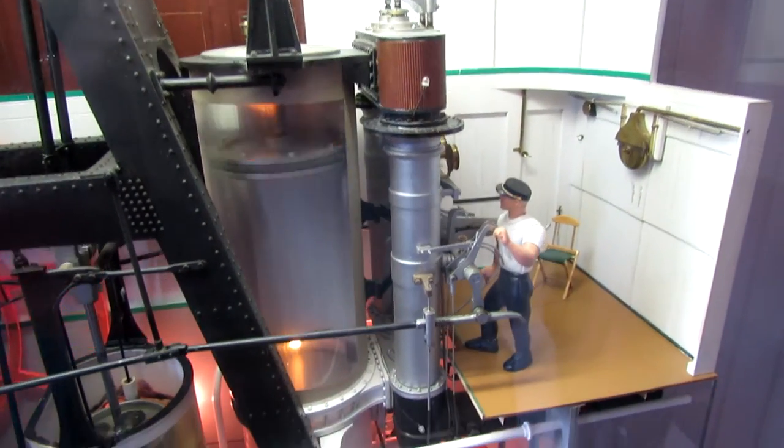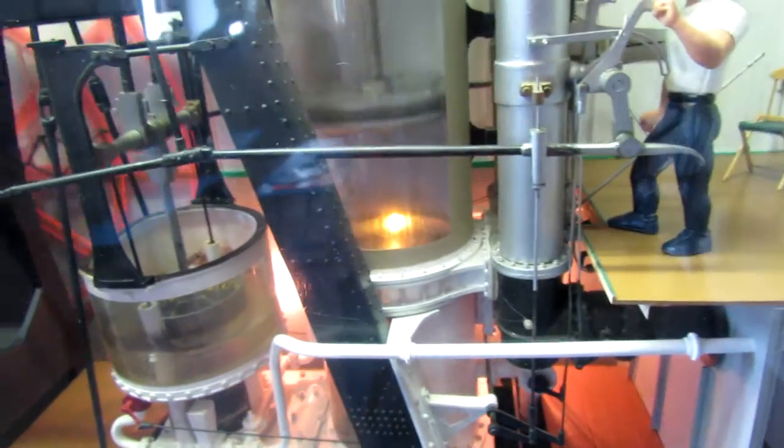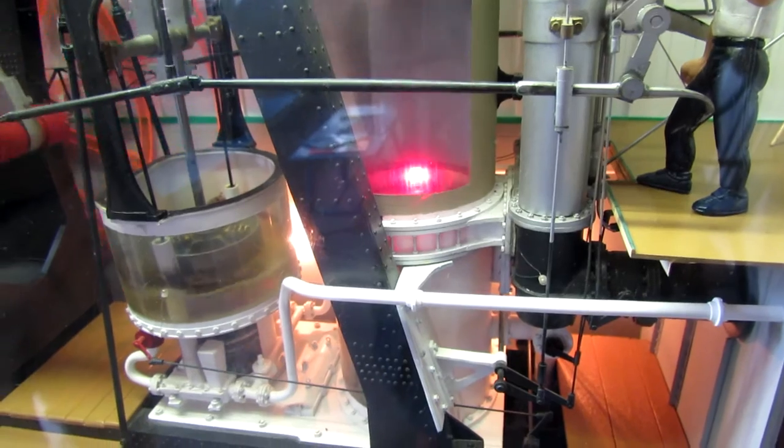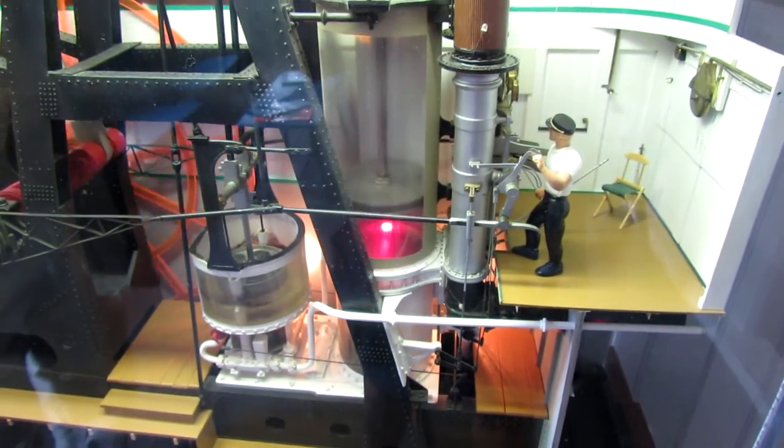When live or expanding steam, represented by a red glow, enters the top of the cylinder, the pressure created by the steam's expansion drives the piston down.